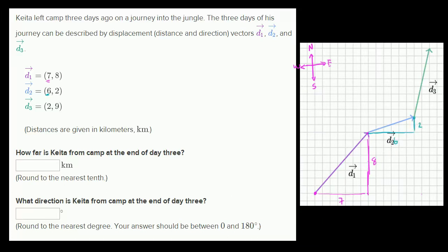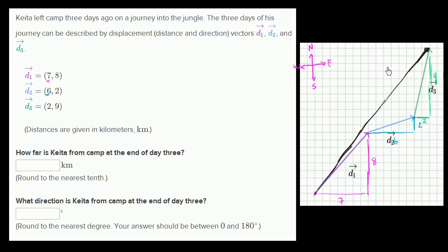Finally, on day three, the component of his displacement to the east is two, and the component to the north is nine. To figure out how far he is from camp at the end of day three, we just need his total displacement — the length of the vector that is the sum of all of these. We can call this d-sub-t for total displacement. The total displacement vector is just the sum of d1, d2, and d3. When summing vectors, you add the corresponding components.